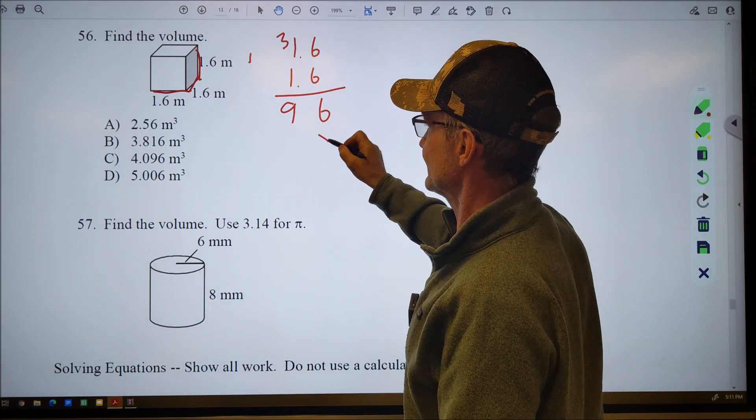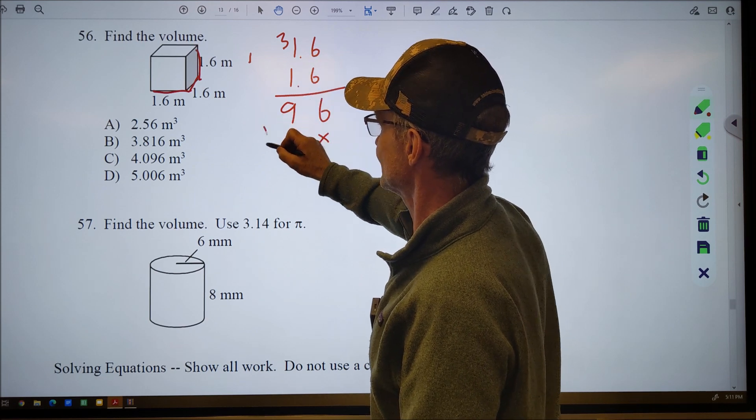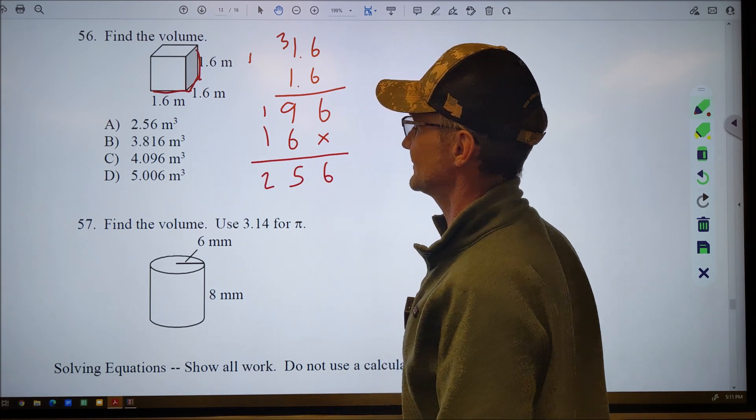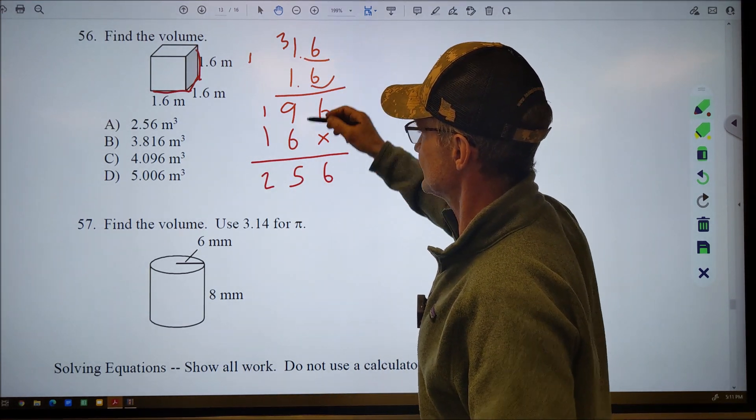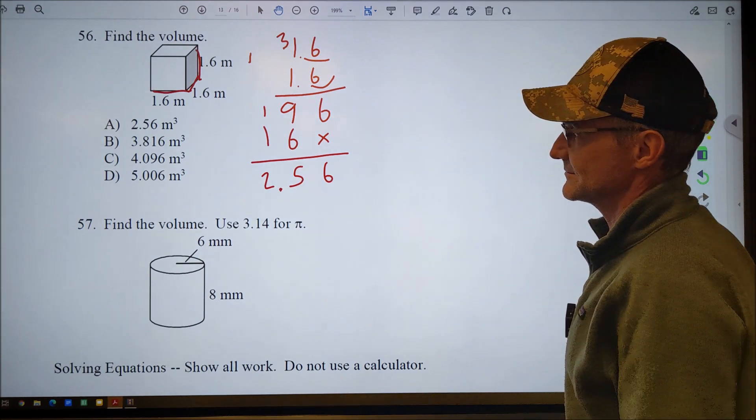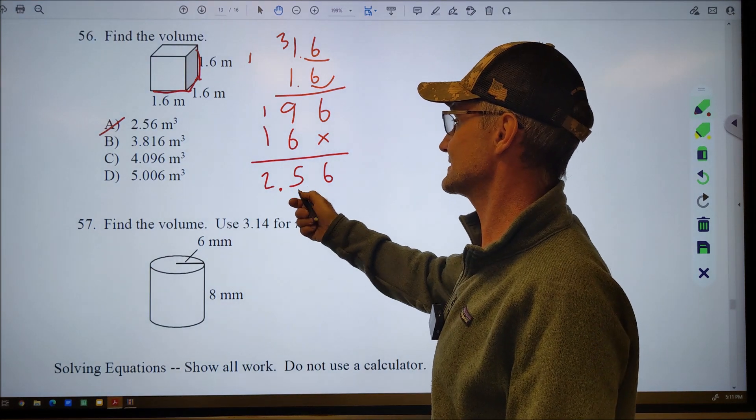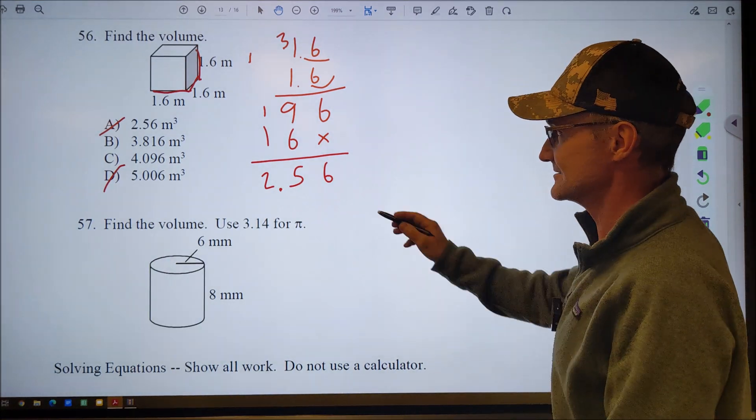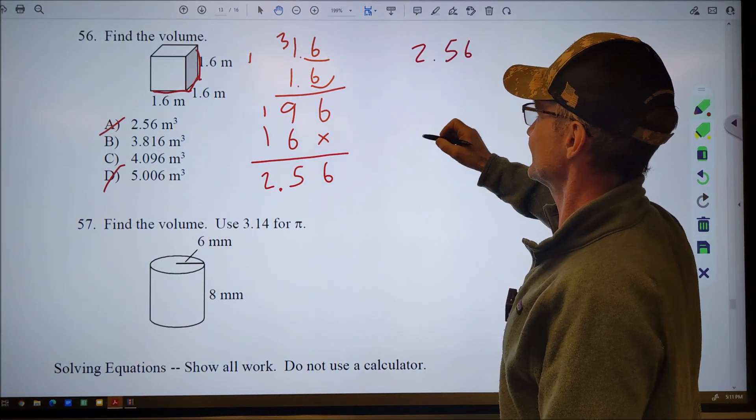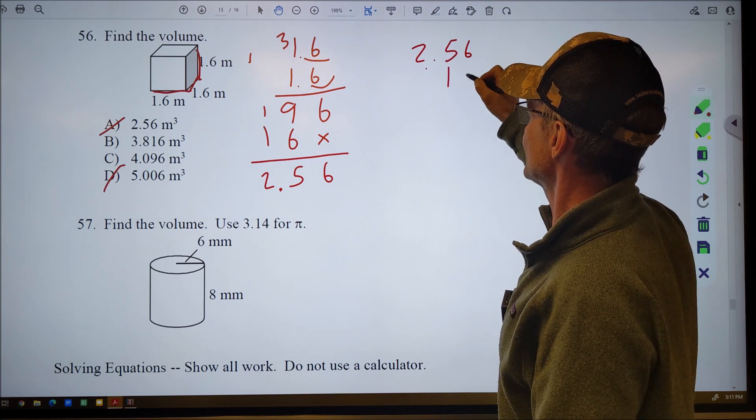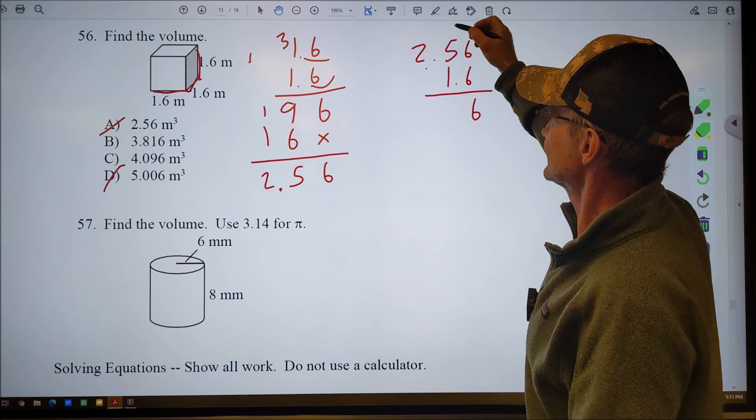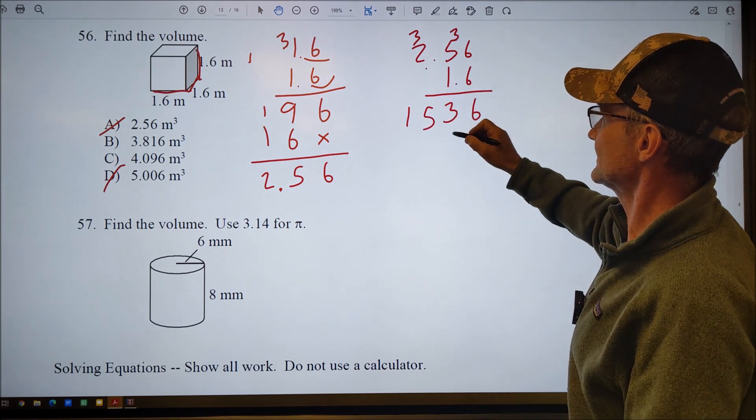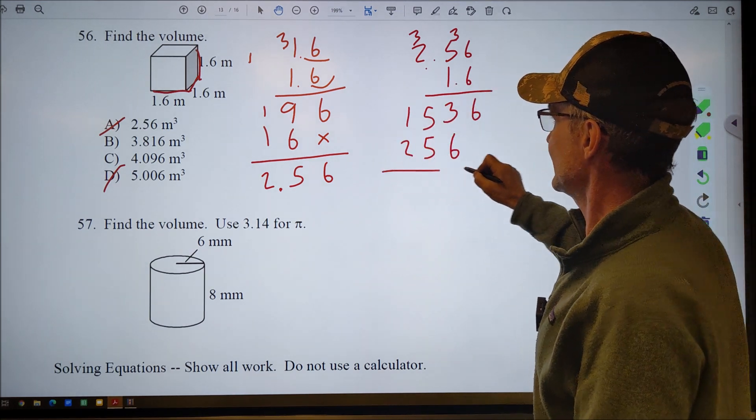6 times 6, 36, carry the 3. 6 times 1 plus 3, 96. I've got my placeholder. 1 times 6. 1 times 1. 6, 15, and 1 will give me 2. 256. I'm over to 1, 2, so it's 2.56. So right now I can see it's not that. 2.56 times 1.6 can't be that, but I'm not positive which one of those it is. So I'm going to multiply this one out. The base area, 2.56 times the height of 1.6.